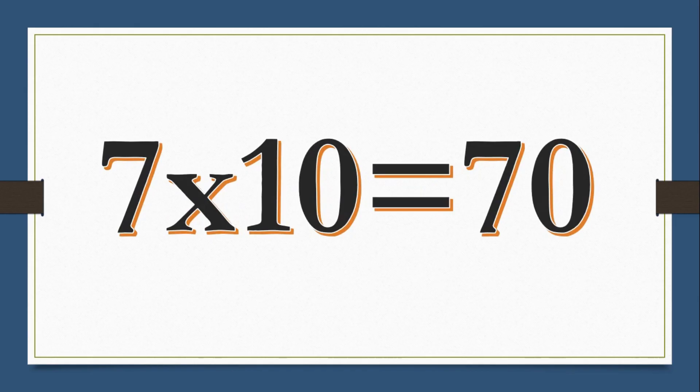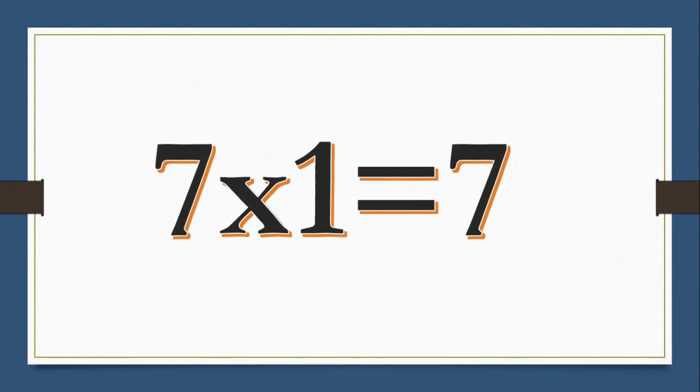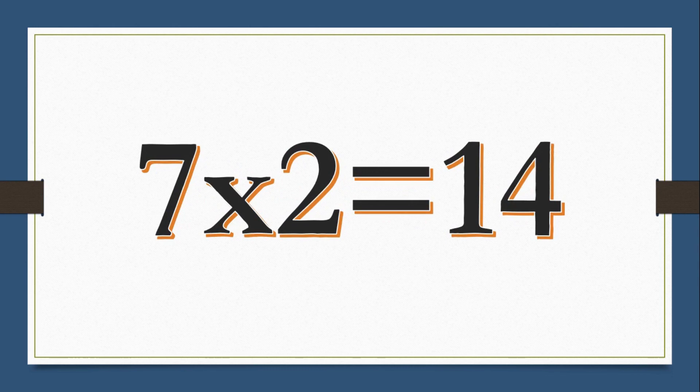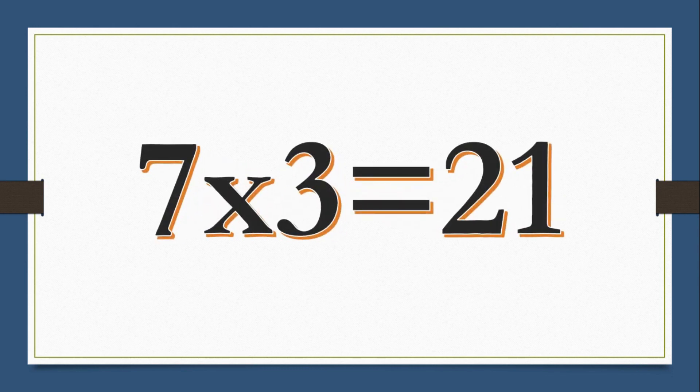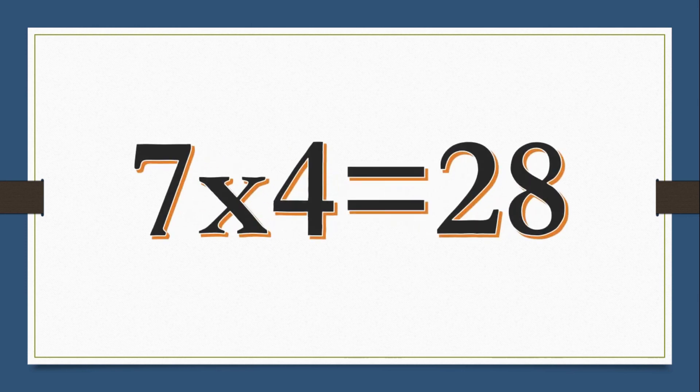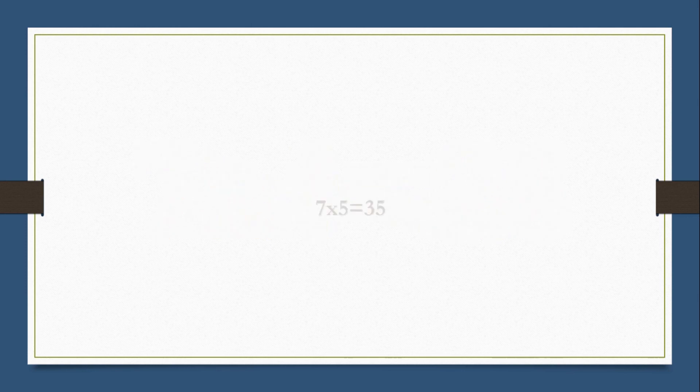7 10s are 70. 7 1s are 7, 7 2s are 14, 7 3s are 21, 7 4s are 28.